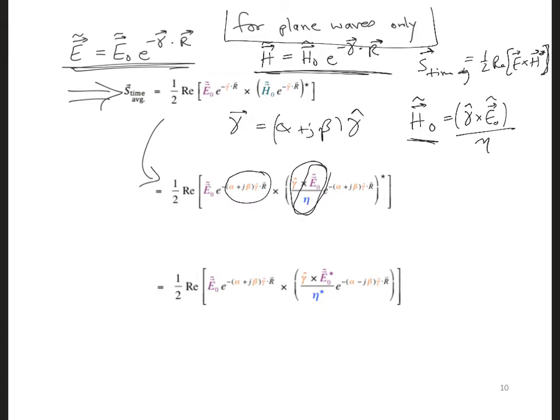Then we can apply the complex conjugate to the phase terms, and this changes the sign here in front of the j beta, and then we also have a complex conjugate now on eta. So we've now applied this to the different terms that it needs to be applied to.